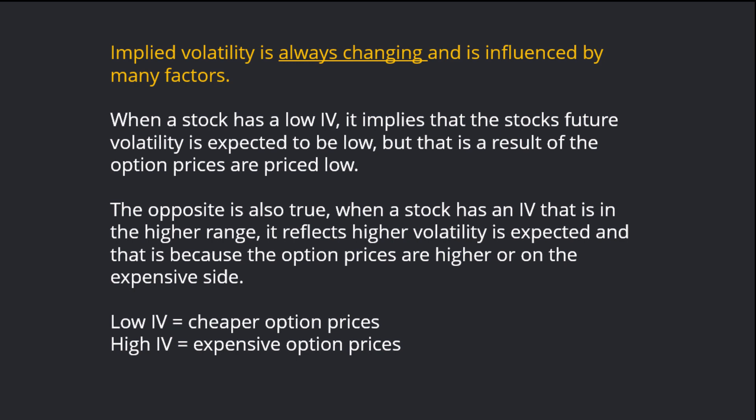The opposite is also true. When a stock has an IV that is in a higher range, it reflects that higher volatility is expected, and that is because the option prices are priced higher or on the expensive side. A rule of thumb: low implied volatility equals cheaper option prices, and higher implied volatility equals expensive option prices.